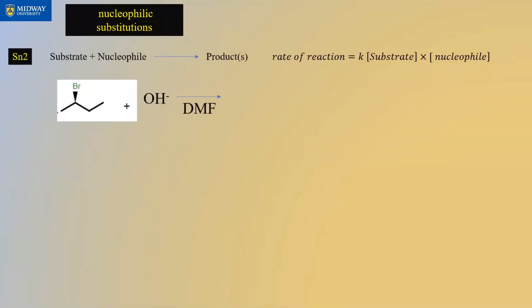Our second example uses a secondary substrate containing Br as the leaving group. This is a strong base in an aprotic solvent, so all indicators point to SN2. The rate of the reaction would be k times the concentration of the substrate with Br times OH⁻.